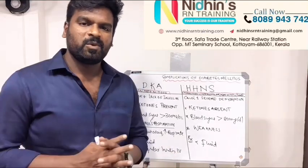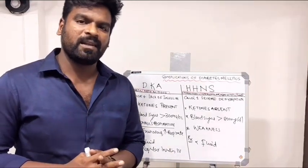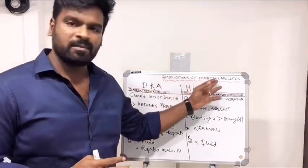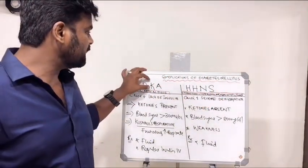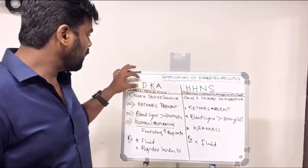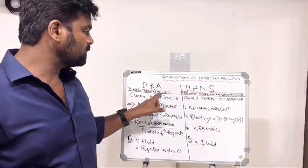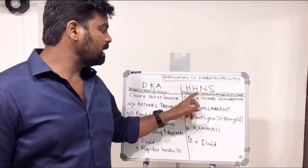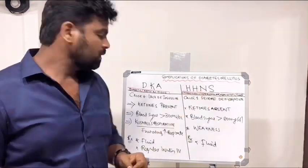Hi, today I am going to deal with a new topic that is complications of diabetes mellitus. It is mainly divided into DKA and HHNS. DKA stands for Diabetic Ketoacidosis, and HHNS stands for Hyperglycemic Hyperosmolar Non-Ketotic Syndrome.